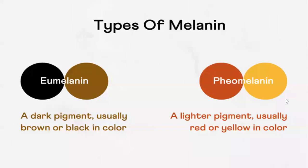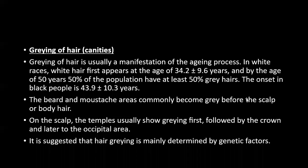Red hair means little pigmentation. Eumelanin stains the hair black or brown, while pheomelanin means less melanin. So the hairs will be blonde or red when there is significant loss of melanin.